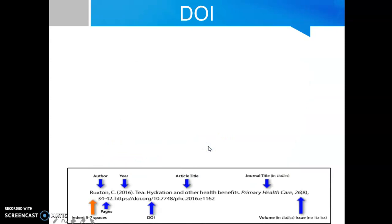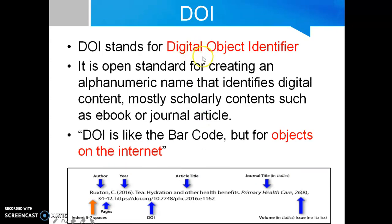DOI stands for Digital Object Identifier. It is an open standard for creating an alphanumeric name that identifies digital content, mostly scholarly content such as an e-book or journal article. DOI is like a barcode but for objects on the internet.